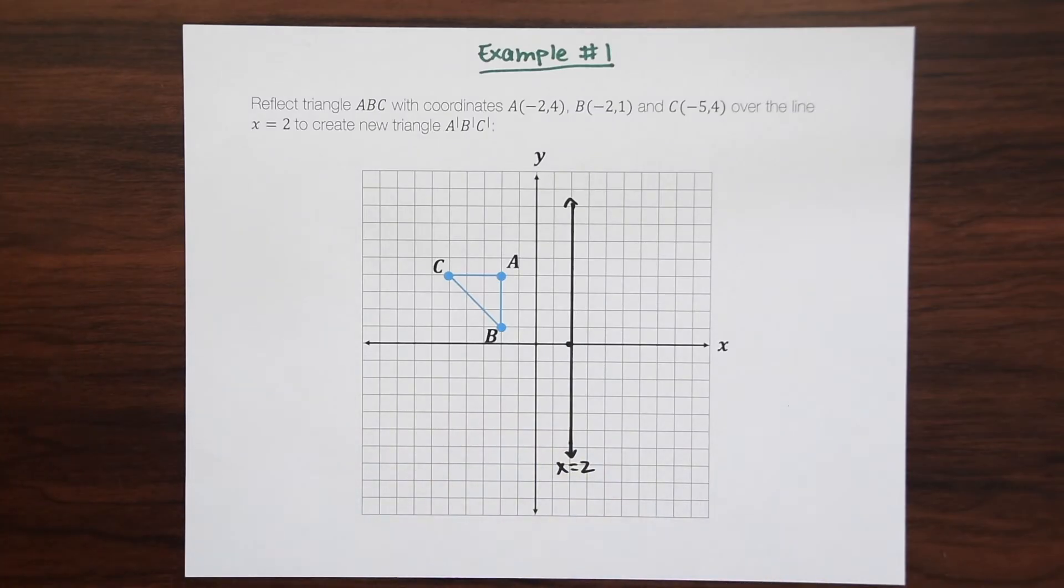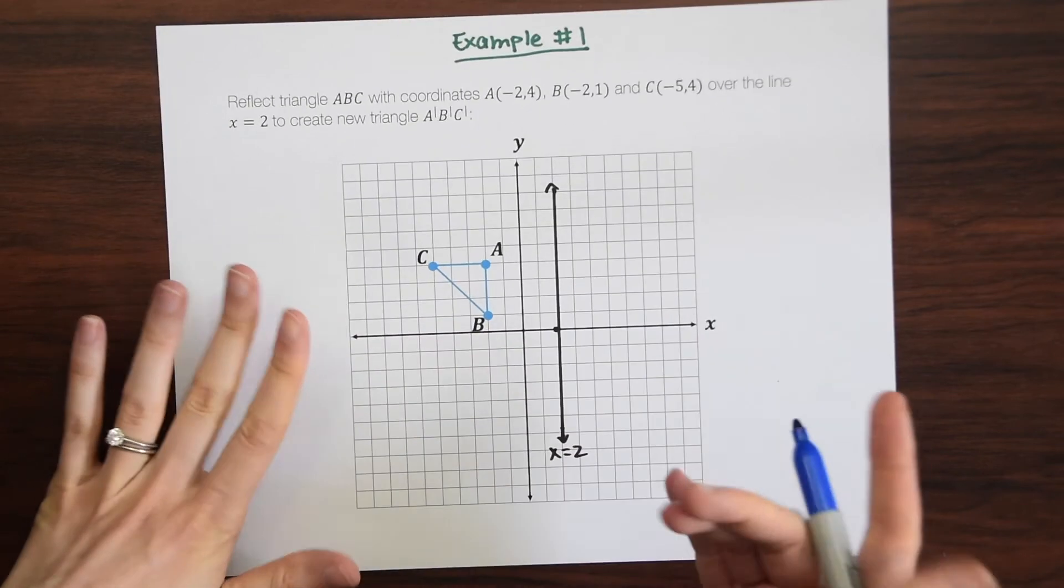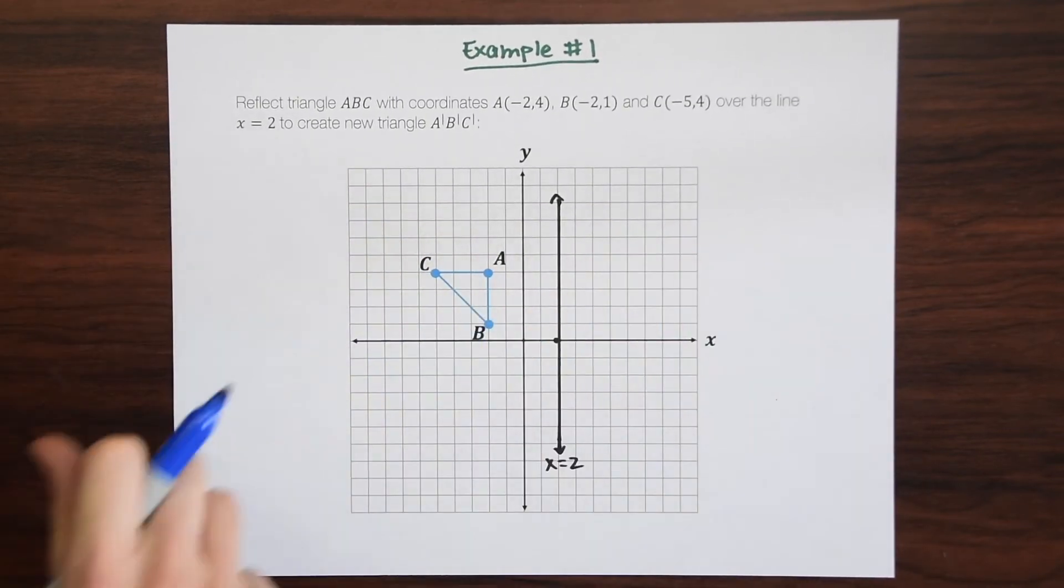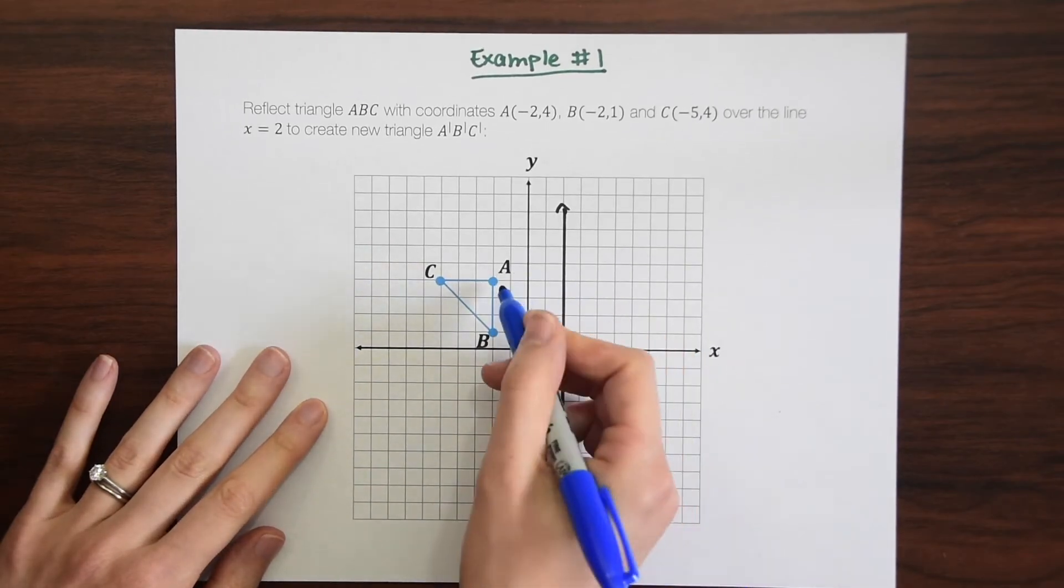So let's leave it at x equals 2. So now all we have to do is reflect each coordinate point one by one to the other side of this line. So we're making a mirror image, and we want to measure out how many units away each point is.